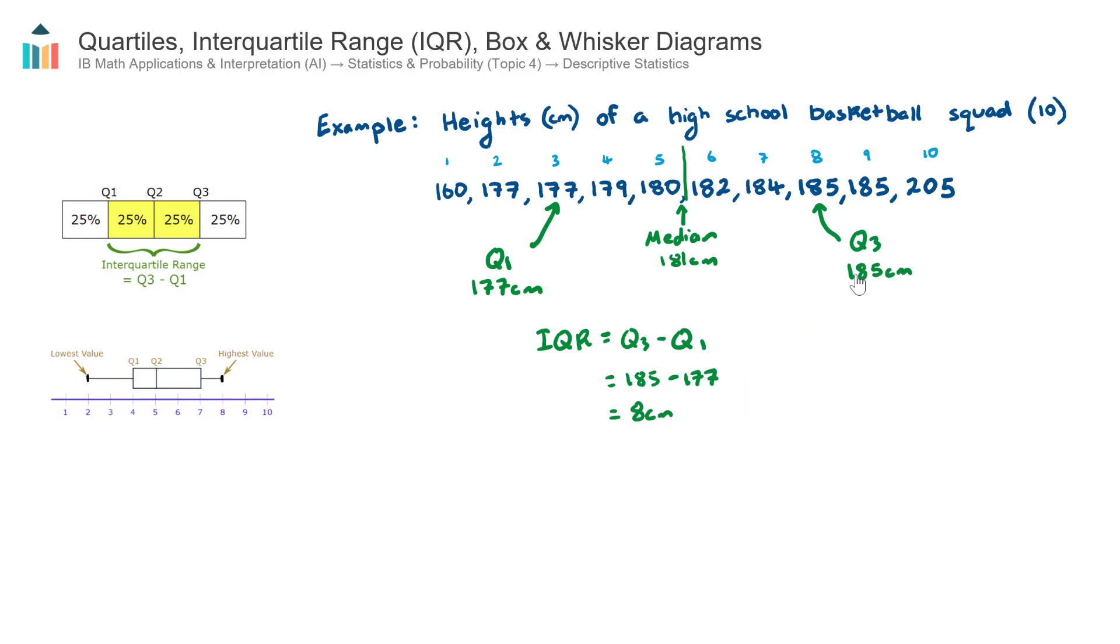Okay, the last thing that I wanted to cover in this video, and it's a natural extension of finding the lower quartile and the upper quartile, is how to draw a box and whisker diagram for a given data set. And it's actually pretty simple if you find the lower quartile, the median, and the upper quartile. So looking at this diagram here on the left, there are five key pieces of information to identify in order to draw one of these diagrams.